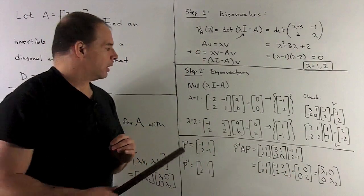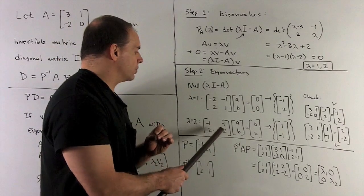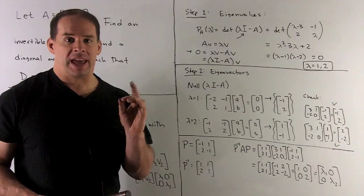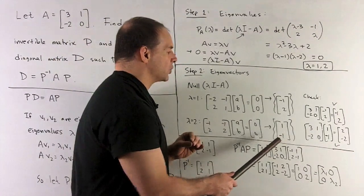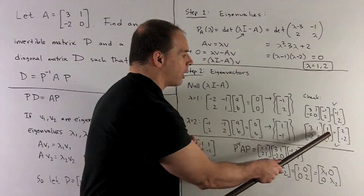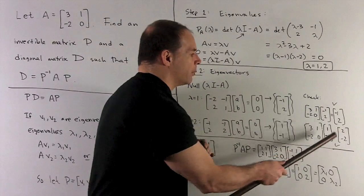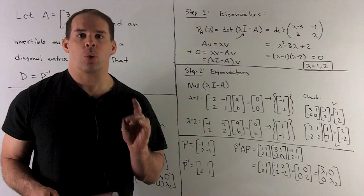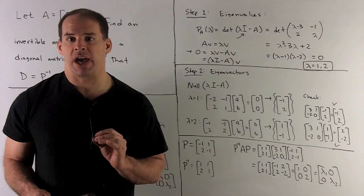Lambda equal to two. We have minus one, minus one, two, two. What vector is when I hit it with that matrix gives me zero. Candidate, it's going to be one minus one. We hit our vector with the matrix. I get two minus two back. That's two times our vector, two times V, or lambda times V in this case. So, that also checks.